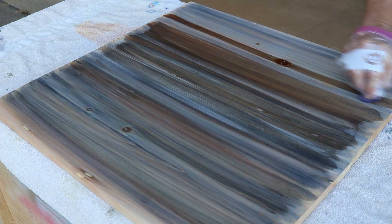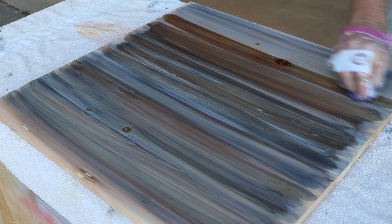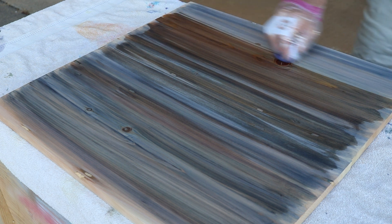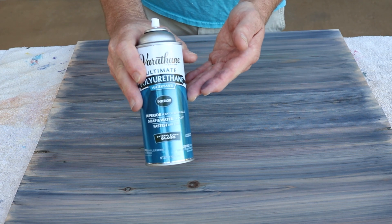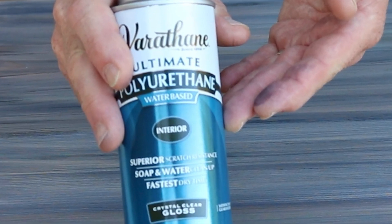Once the dye thoroughly dries, which won't take long, I am going to put two or three coats of sealer. It's a water-based polyurethane by Verithane that works fantastic, and that's going to help prevent the capillary action which can make it very difficult to make clean stencils.